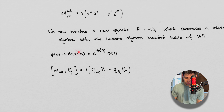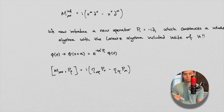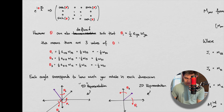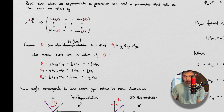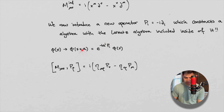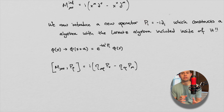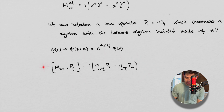This P_i operator constructs a whole new algebra if we include it with the Lorentz algebra. This P_i shows up in an exponentiation — it's an operator. So if we want to shift the field, we exponentiate P_i with our argument A, which is sort of our theta argument, and this helps us transform the field. The argument A is what you place inside the exponent — it tells us how much we want to shift.